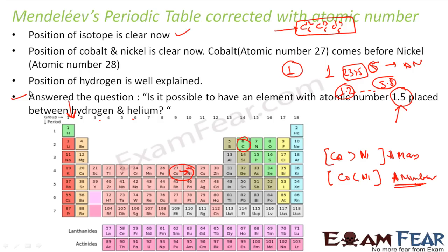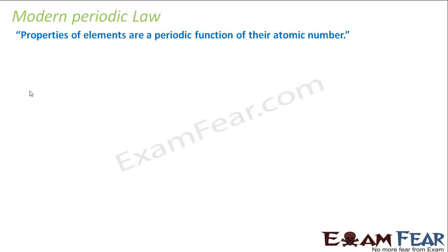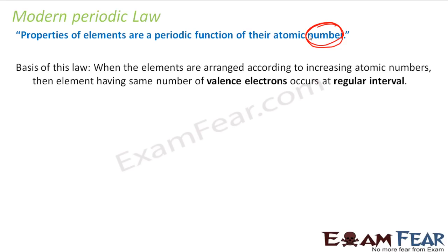So the only one correction — using atomic number instead of atomic mass — solved so many issues. The modern periodic law says that the properties of elements are a periodic function of their atomic number. The basis of this law is that when elements are arranged in increasing order of atomic number, those having the same valence electrons occur at regular intervals.